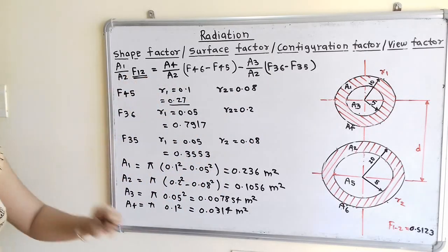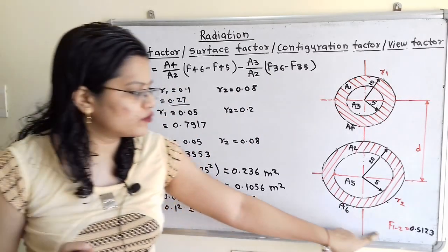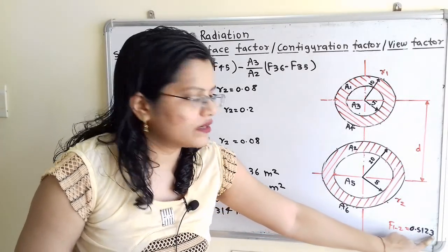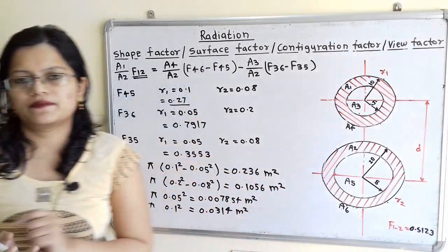Putting all values together, we get the final answer: F(1→2) = 0.5123.